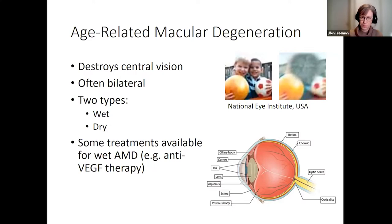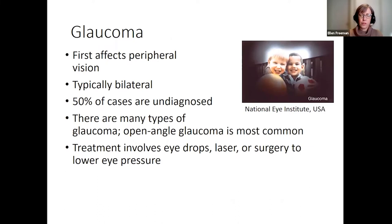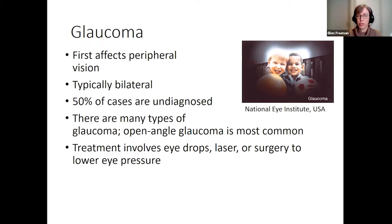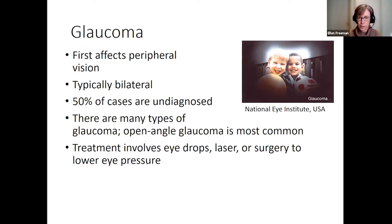Glaucoma starts at the periphery of vision, so it may go unnoticed until severe. In advanced stages it's like looking through a tunnel. It is also typically bilateral. Without regular eye care, many people remain undiagnosed. In Canada, primary open-angle glaucoma is the most common type. Treatments include lowering eye pressure through eye drops, laser, or surgery.